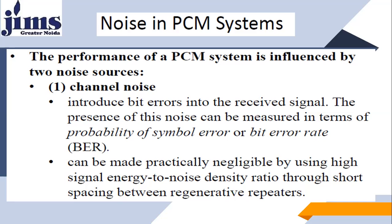The bit error rate can be improved or minimized by increasing the signal-to-noise ratio. Signal-to-noise ratio is proportional to bit error rate. So if you increase signal-to-noise ratio — meaning you increase signal power with respect to noise power — your bit error rate is minimized or improved.